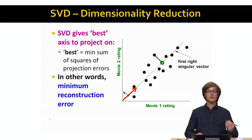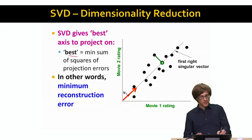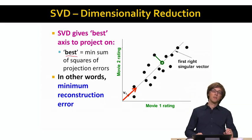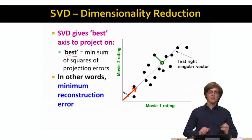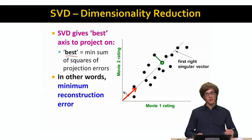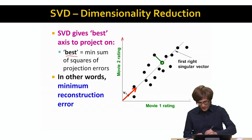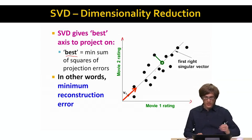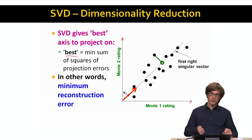The best means that the sum of the squared projection errors is minimized. We want a small set of axes such that if we represent our data in terms of those axes, we get the minimum reconstruction error. The simple example to see this would be in this two-dimensional case, where every axis is a separate movie, we have users ranking movies, every point is a user, the x position is how much they rated movie one, and the y position is how much they rated movie two.